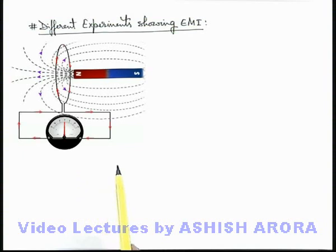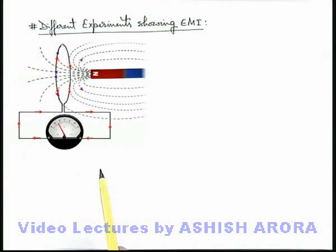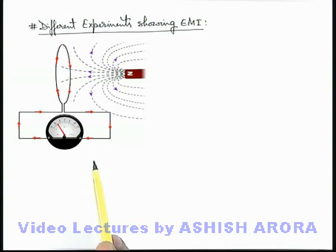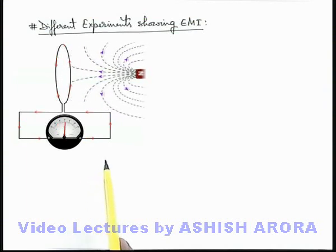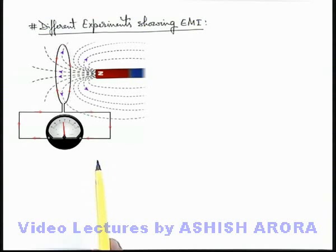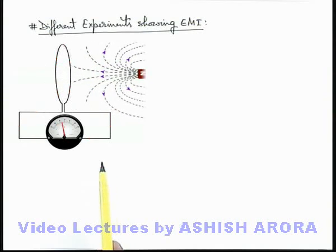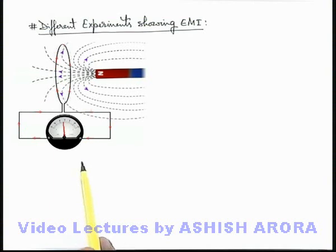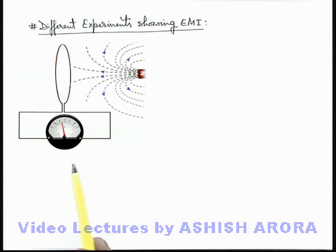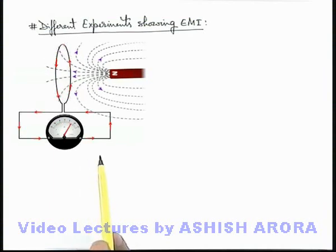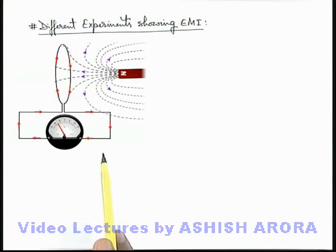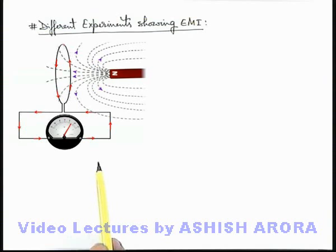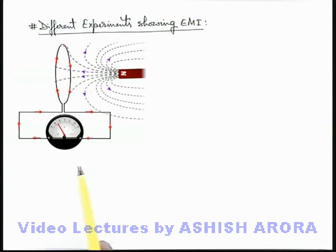If the magnet is brought back, you can see that the direction is changed and the galvanometer shows deflection in the opposite direction. If the magnet continuously oscillates back and forth, the direction of current in the galvanometer continuously changes. We can say that due to this relative motion between the magnet and the coil, an alternating current is induced in the circuit because of the EMF induced in the coil.